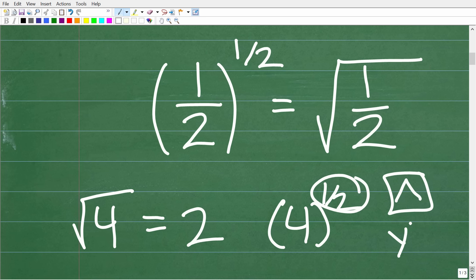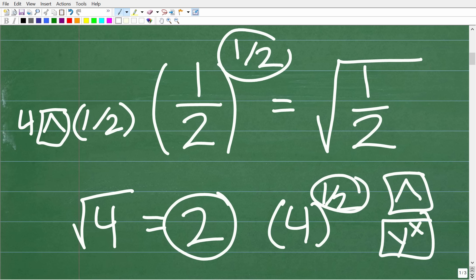It's an upside down v or maybe something like y to the x. So you're going to type in four and then maybe this caret key and then use parentheses one divided by two for one half. Hit enter and you'll see the answer is two. But again, anything to the one half power means just take the square root of that thing.